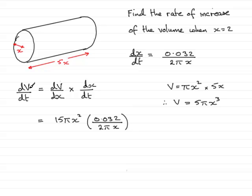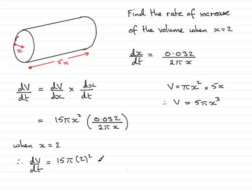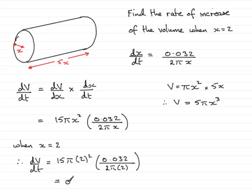So we've got to find the rate of change of the volume when x is 2. All I need to do is substitute x equals 2 into this equation. So we therefore have dv by dt equals 15 pi times 2 squared, multiplied by 0.032 all over 2 pi times 2. You might notice that the pi's cancel and the x terms cancel. But at the end of the day, the exact value you should end up with is 0.48.